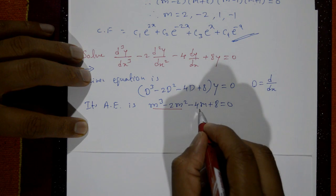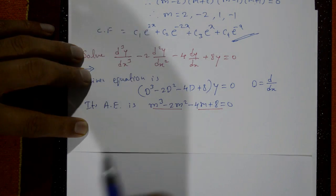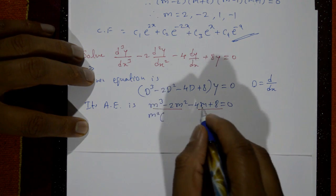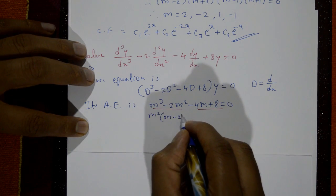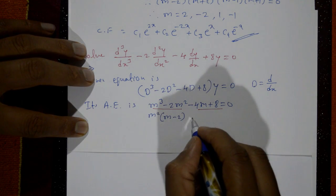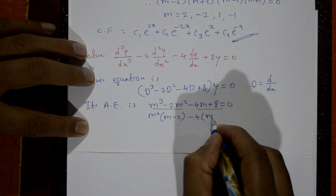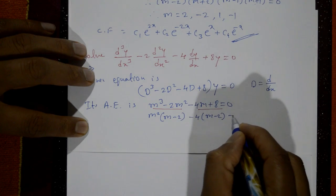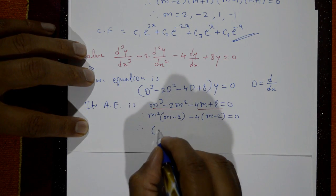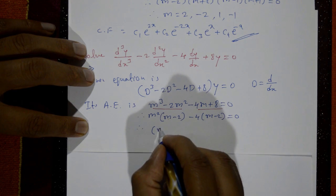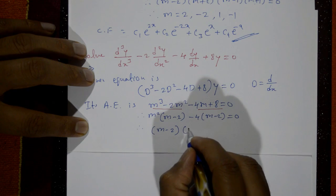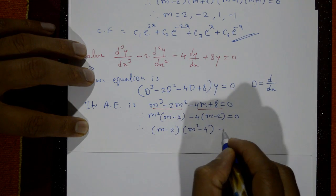Looking at the first two terms, m² is common: m²(m minus 2). From the remaining two terms, minus 4 is common: minus 4(m minus 2) equal to 0. So (m minus 2) is the common bracket, giving (m minus 2)(m² minus 4) equal to 0.